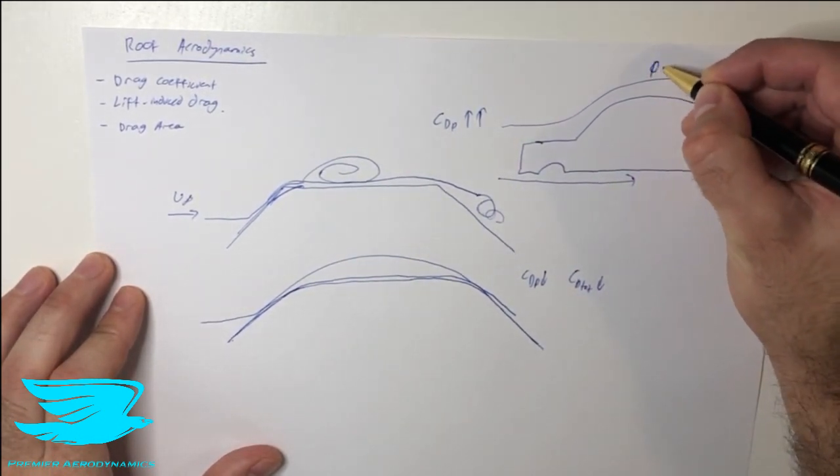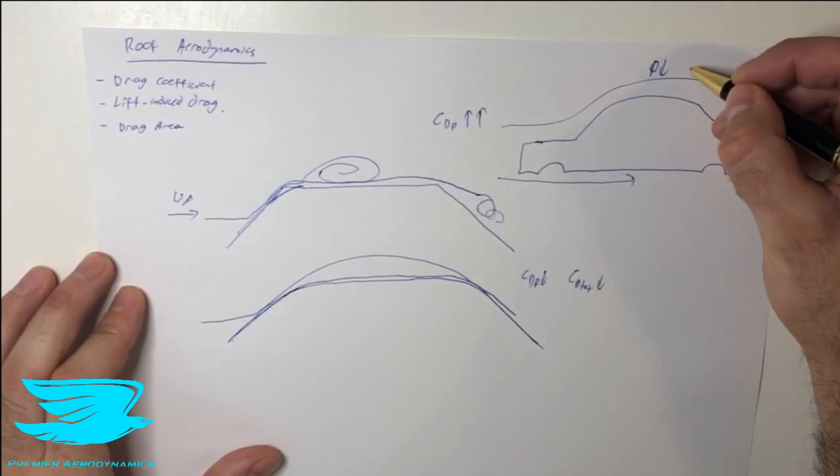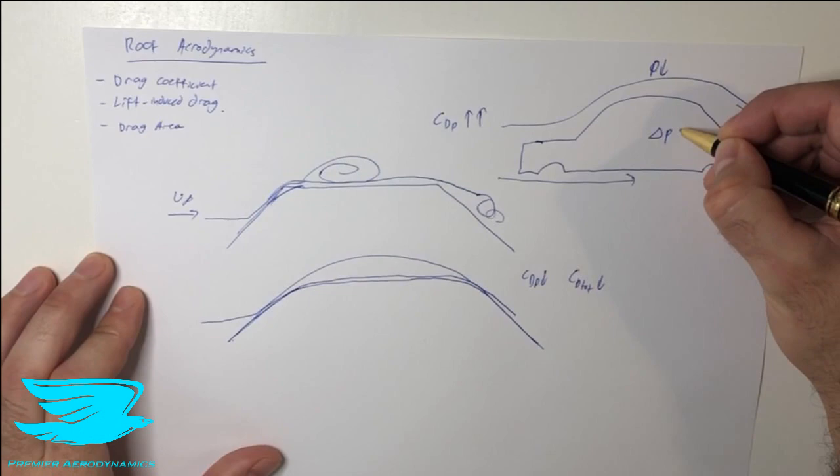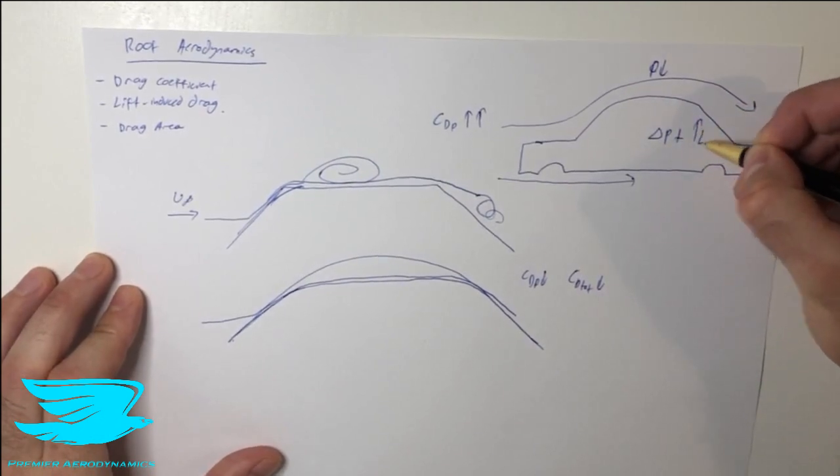What happens is that the pressure drops, so we have a net pressure difference from the bottom to the top, which is positive. So that means that we actually have a lift being produced.